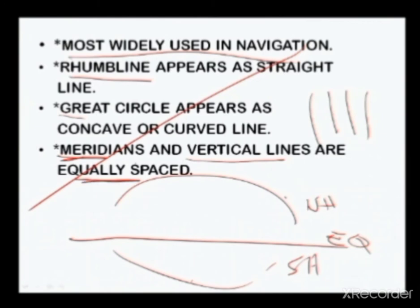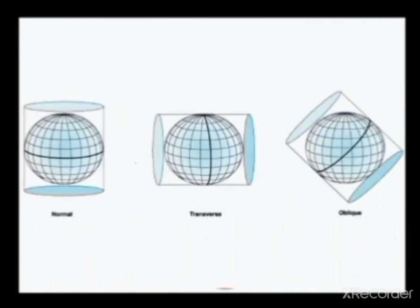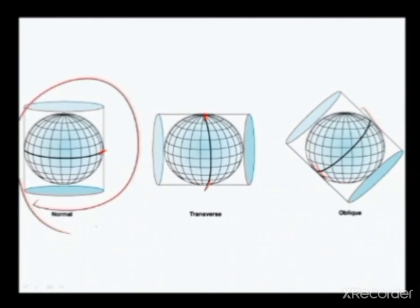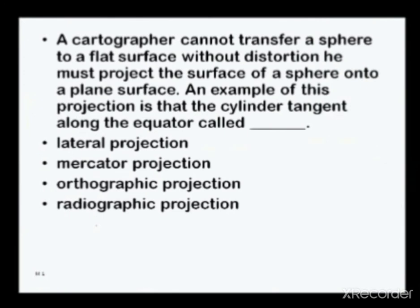Now, the normal cylinder has its point of tangency at the equator, but you have a transverse where the point of tangency is at the pole. A cartographer can transfer a sphere to a flat surface — he must project the surface of the sphere onto a plane surface. An example is when the cylinder is tangent along the equator.